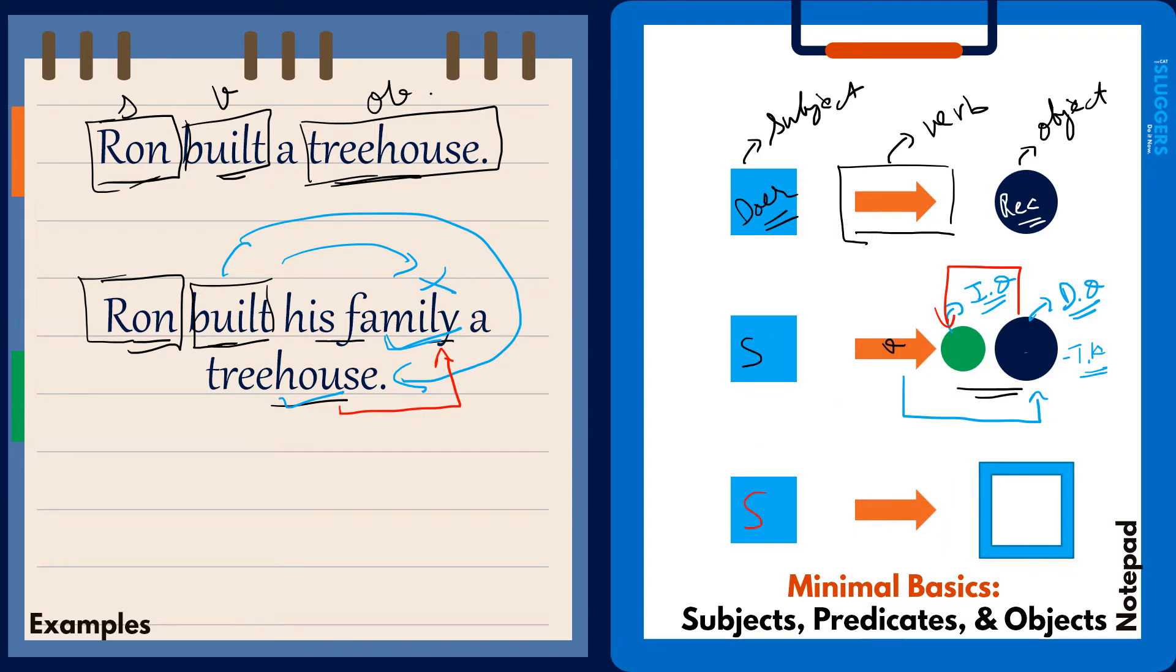The last format is where you have a subject and instead of having objects, you have subject complements. A subject complement is basically just something that gives you information about the subject. For example, if I say 'Ron is a good builder,' the phrase 'a good builder' is just giving you more information about the subject, about Ron. So it will be considered as the subject complement.